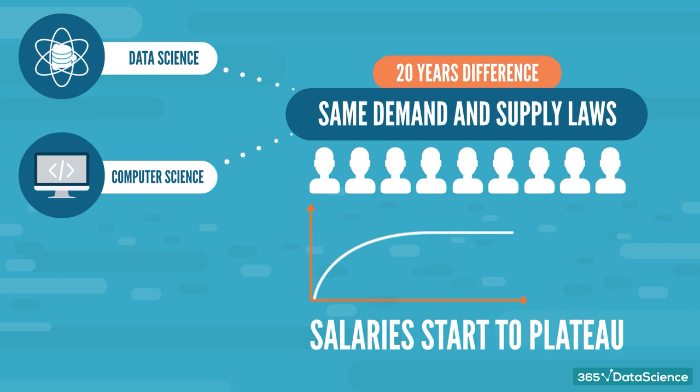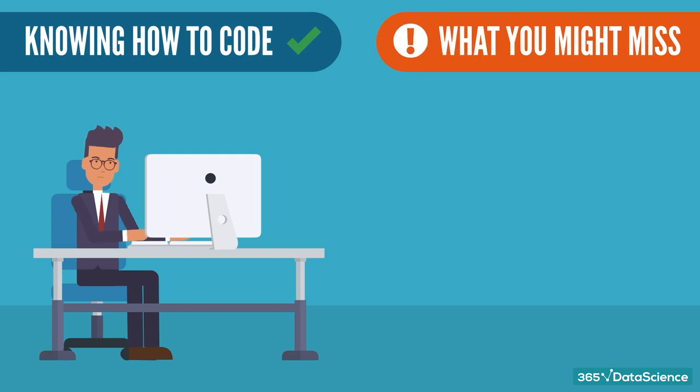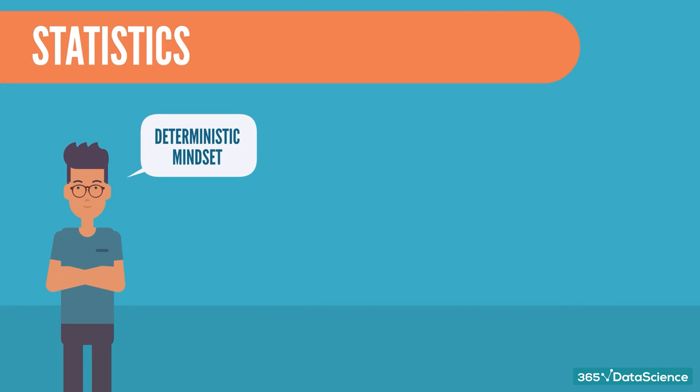So how do you do that? Knowing how to code has already put you on the fast track to the DS role. What you might miss in terms of knowledge is statistics. Computer scientists boast a deterministic mindset. This compels them to want to have all possibilities covered. And that's great,